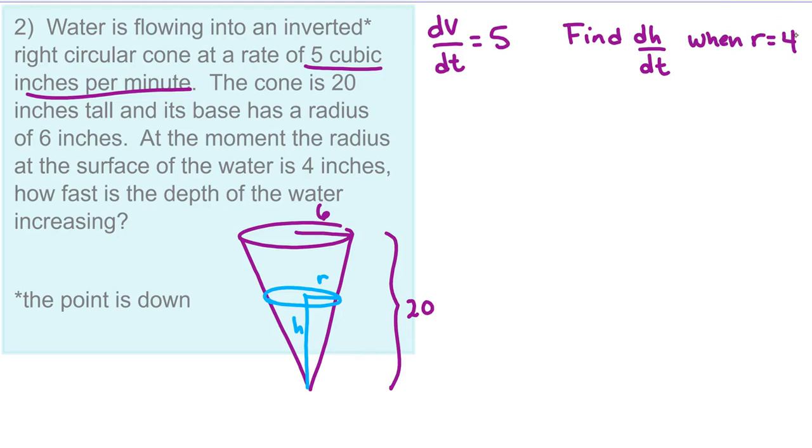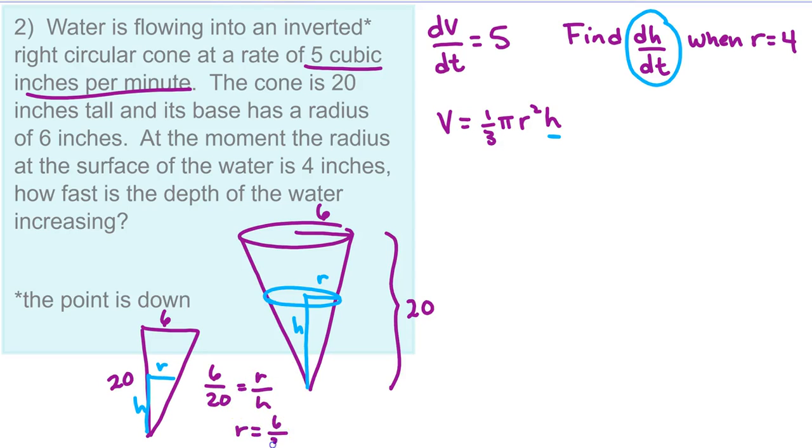Okay. So remember that in this kind of situation, we're going to use the volume of a cone formula. But we can, if we can find a way, we can eliminate one of these variables. So we want to find dh dt. That means we want to keep h. So let's find a way to eliminate r. So going back to the figure, if we think about the similar triangle situation here, 6 is to 20 as r is to h. So we can make a proportion, 6 over 20 equals r over h. Isolate r, we get r equals 6 twentieths h. Reduce that, we have r equals 3 tenths h.